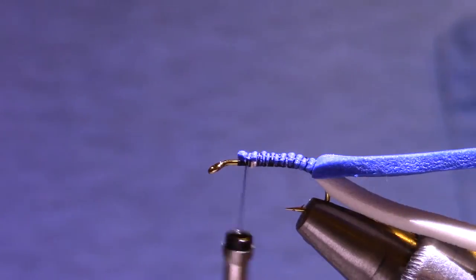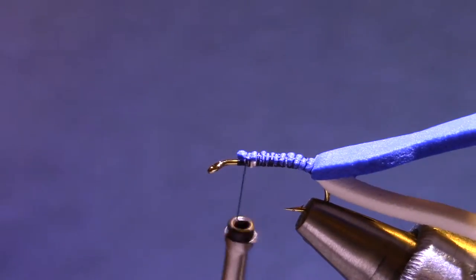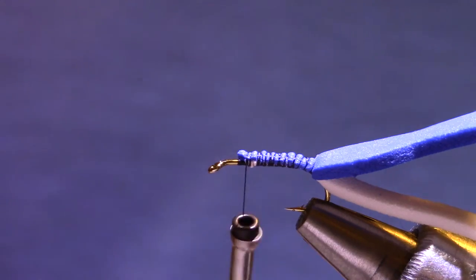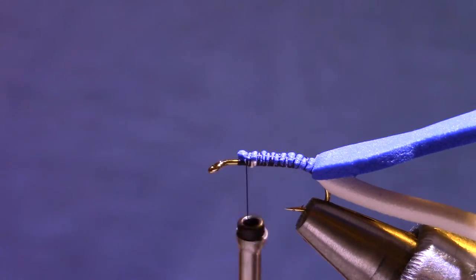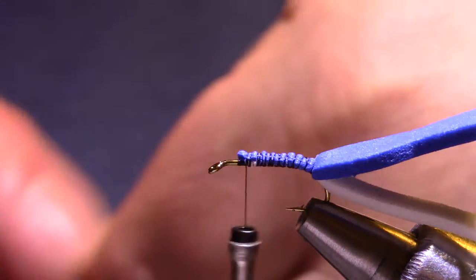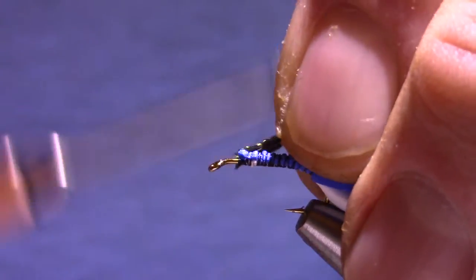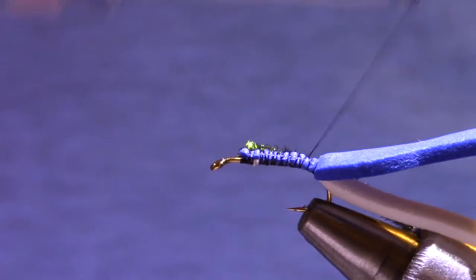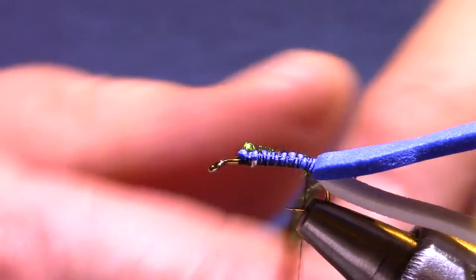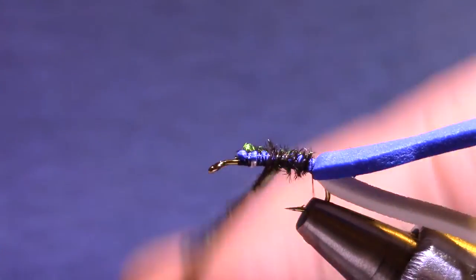If you use a different hook you may end up adjusting where that goes. Now for an underbody I'm going to use Peacock and just a couple of strands is enough. To get them good and plush I tie them along the length of the body. And then wrap the two strands forward.